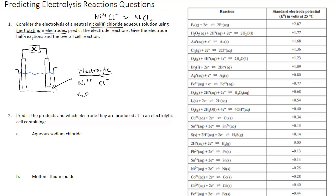We have to give the electrode half reactions and the overall cell reaction. The DC power supply pushes electrons out of its negative terminal into one electrode and pulls electrons from the other electrode towards its positive terminal. I always think of the positive terminal like a vacuum cleaner — it sucks up electrons — while the negative side deposits electrons into the electrode.